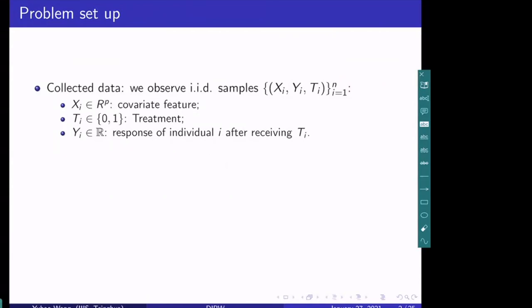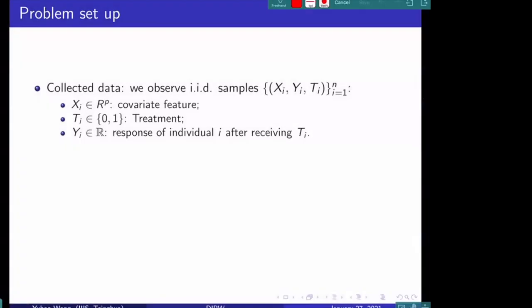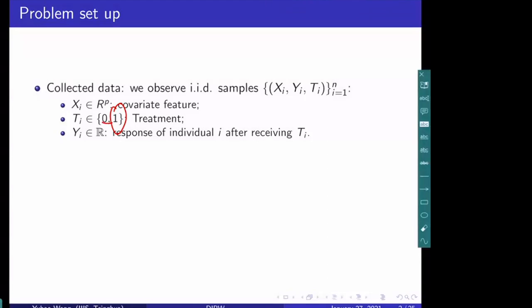T_i is the treatment. You can consider a clinical trial setting where each individual receives a medical treatment or not. T_i corresponds to the indicator of whether this individual has received treatment: if T_i equals one, they received the treatment; if T_i equals zero, they did not receive the treatment. Y_i corresponds to the response of individual i after receiving treatment T_i. This is a very classical setting in causal inference.